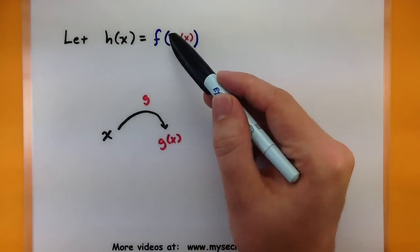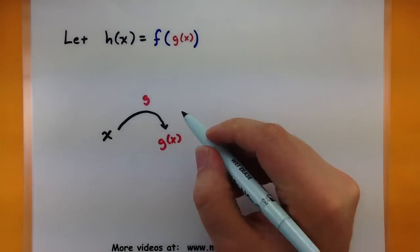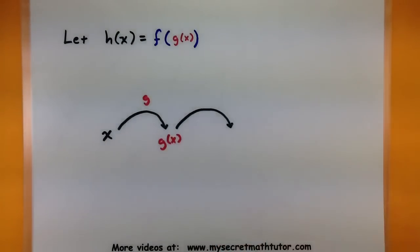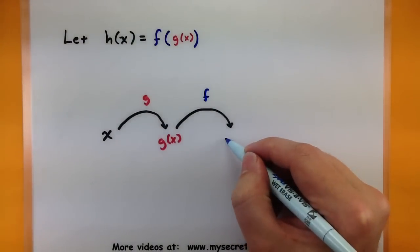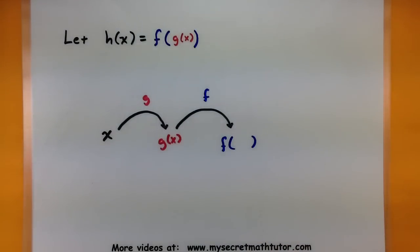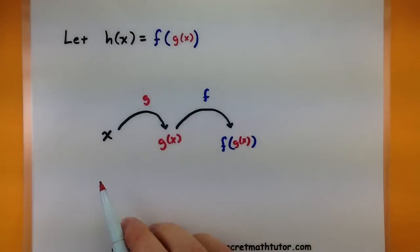Now g would do whatever it is designed to do, depending on what function it is, and it would produce an output, and let's call that output g of x. So that looks pretty straightforward so far. Now after g is done, then it feeds its value directly into f. So we get some sort of value out of here. Now it gets fed directly into your f function, and f will do something to it. So f of g of x is what it produces in the end. So this is the process of composition.